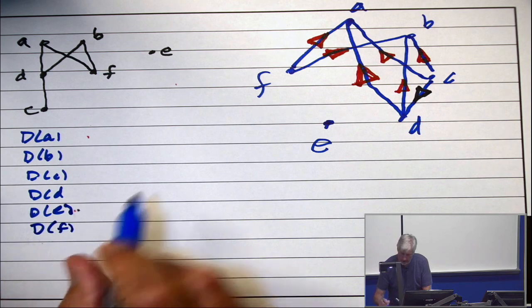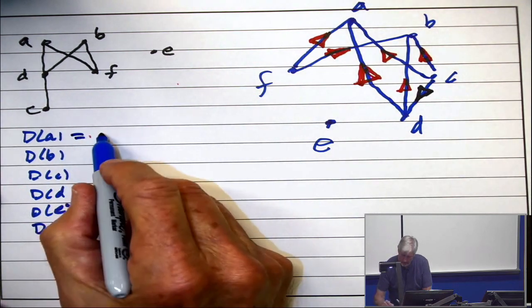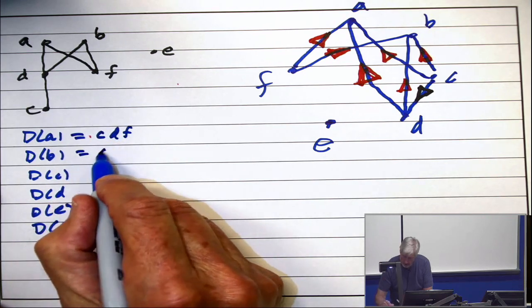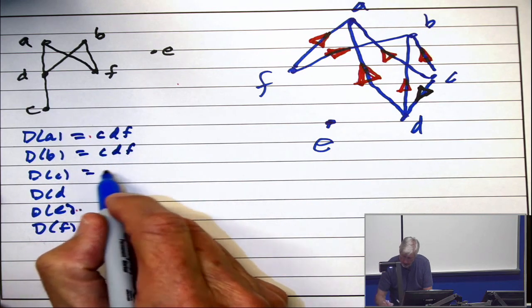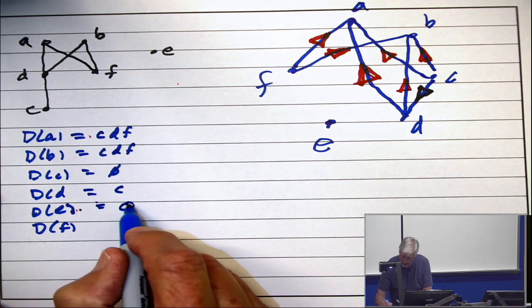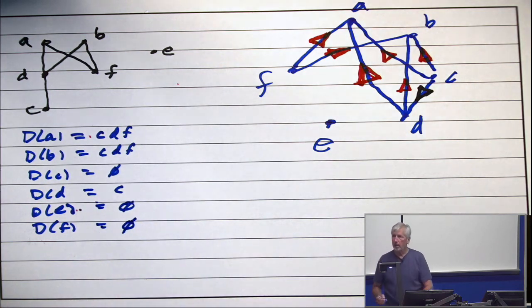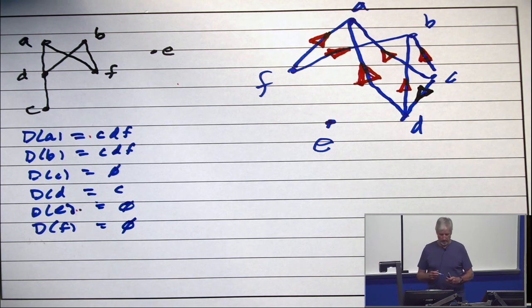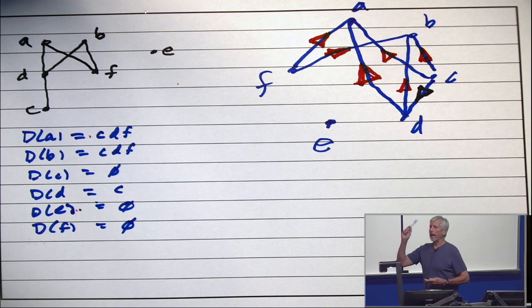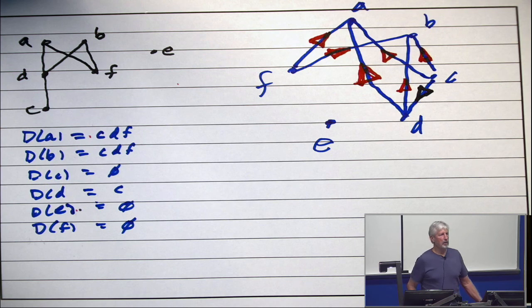Down from F. Okay, let's quickly do it. Down from A, CDF. Down from B, CDF. Down from C, empty. Down from D, C. Down from E, empty. Down from F, empty. Pick up any two sets. Are they comparable? Yes? All right. Now, back out to the original question. Is the graph an interval graph? Yes. I know the answer. Yes.